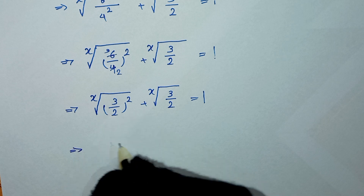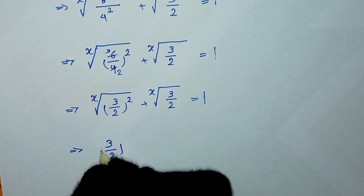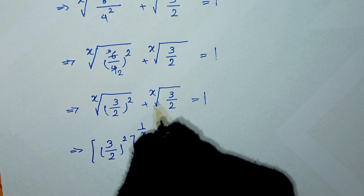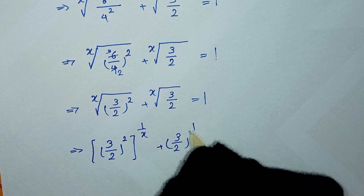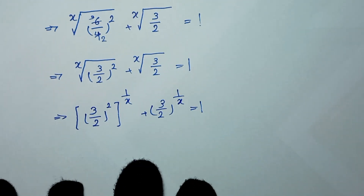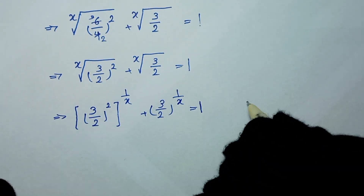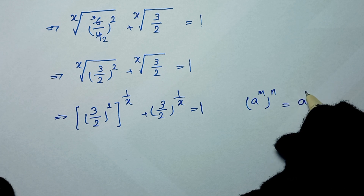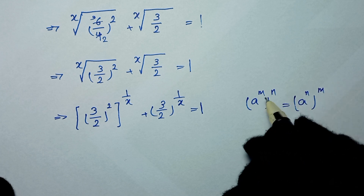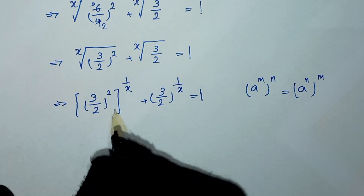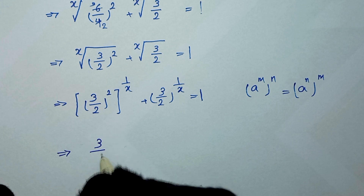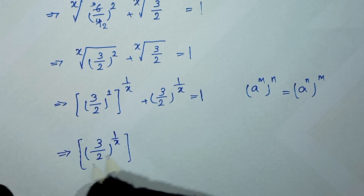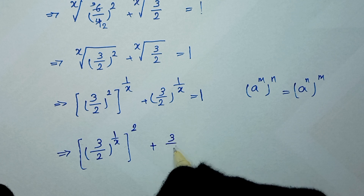We can write x-root of (3/2)² as (3/2)² to the power of 1/x, and x-root of 3/2 as (3/2) to the power of 1/x. From the exponential rule, if we have a^(m^n) we can exchange the powers. So we write (3/2) to the power of (1/x) times 2, plus (3/2) to the power of 1/x.